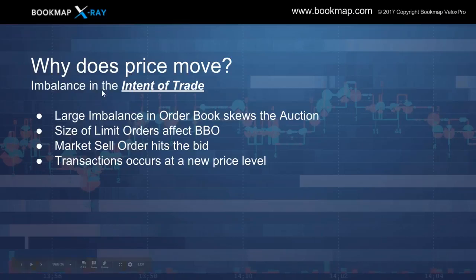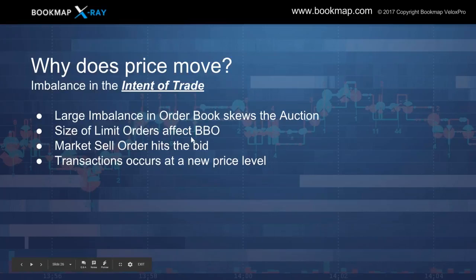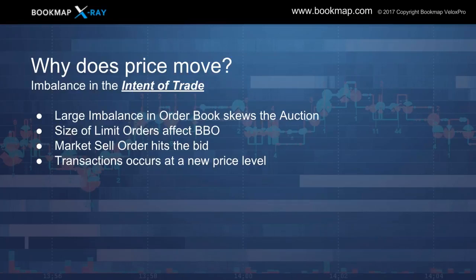Why does price move? The imbalance in the intent of trade. Large imbalances in the order book skew the auction. The size of limit orders is going to affect the best bid and offer — they may pull or add liquidity. When a market sell order moves price and hits the bid, we might see a big move without much volume because they pulled their liquidity. There was an imbalance, they pulled their liquidity on the bid, and the transaction occurs at a new lower price.